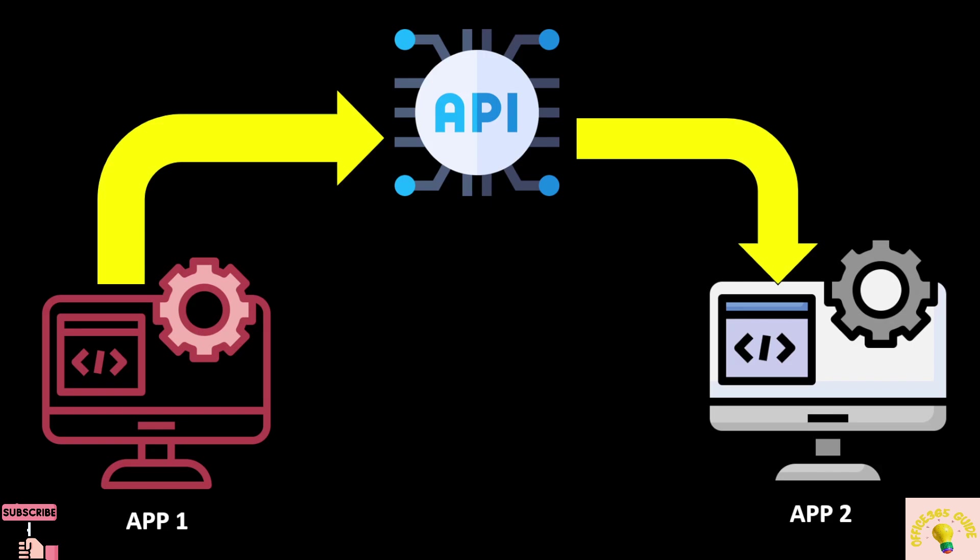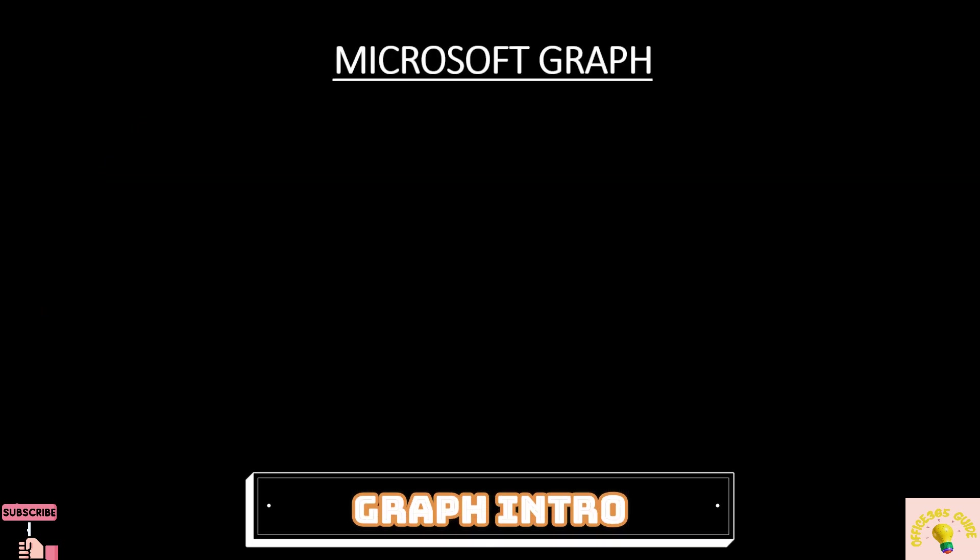Another example I could think of: let's say you walk up to a restaurant and you want to order something — say a pizza. What will you do? You will call the waiter. The waiter will get the pizza for you. So in our restaurant example, the waiter is actually the API. Microsoft Graph works in a similar fashion.